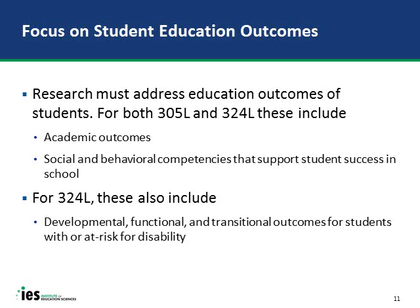For students with or at risk for disabilities, student outcomes also include developmental outcomes for younger students in the domains of cognitive, communication, linguistic, social, emotional, adaptive, functional, or physical development. They can also include functional outcomes for older students that improve education results and transitions to employment, independent living, and postsecondary education.